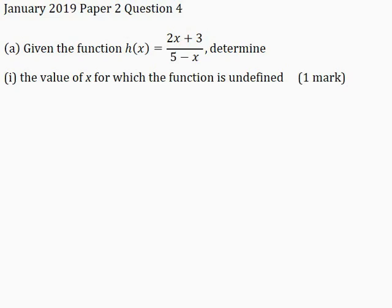In this video I will be solving January 2019 Paper 2, Question 4. Part A: given the function h of x is equal to 2x plus 3 all over 5 minus x, determine part 1 — the value of x for which the function is undefined, for one mark.